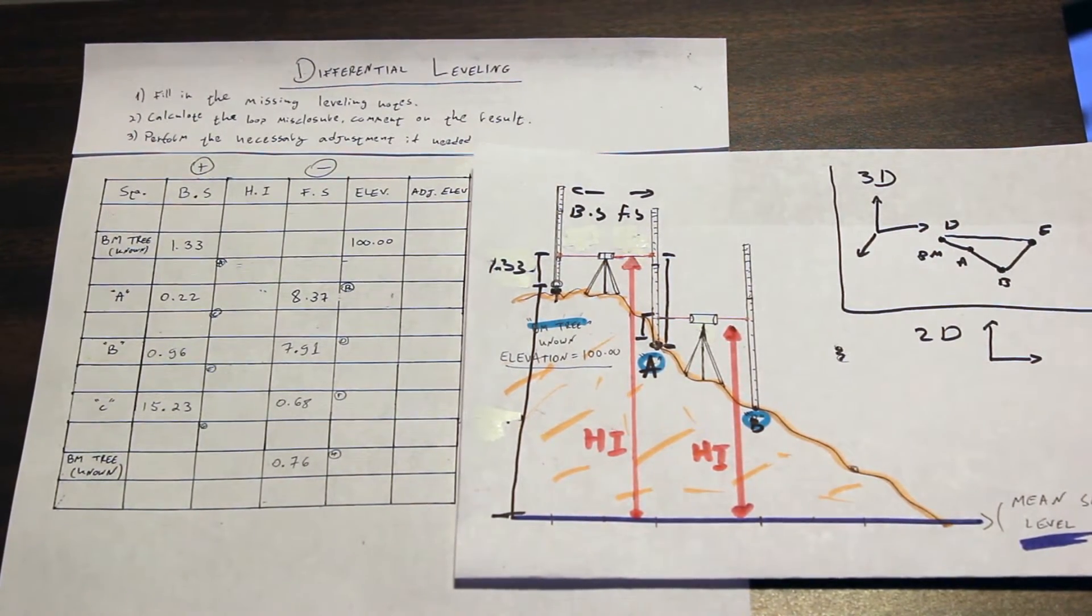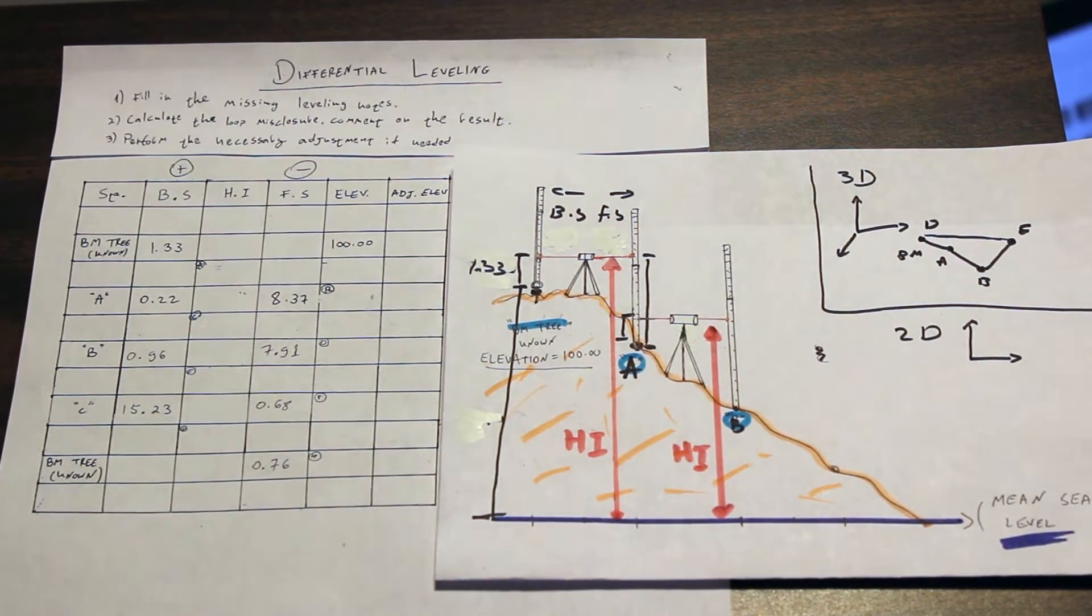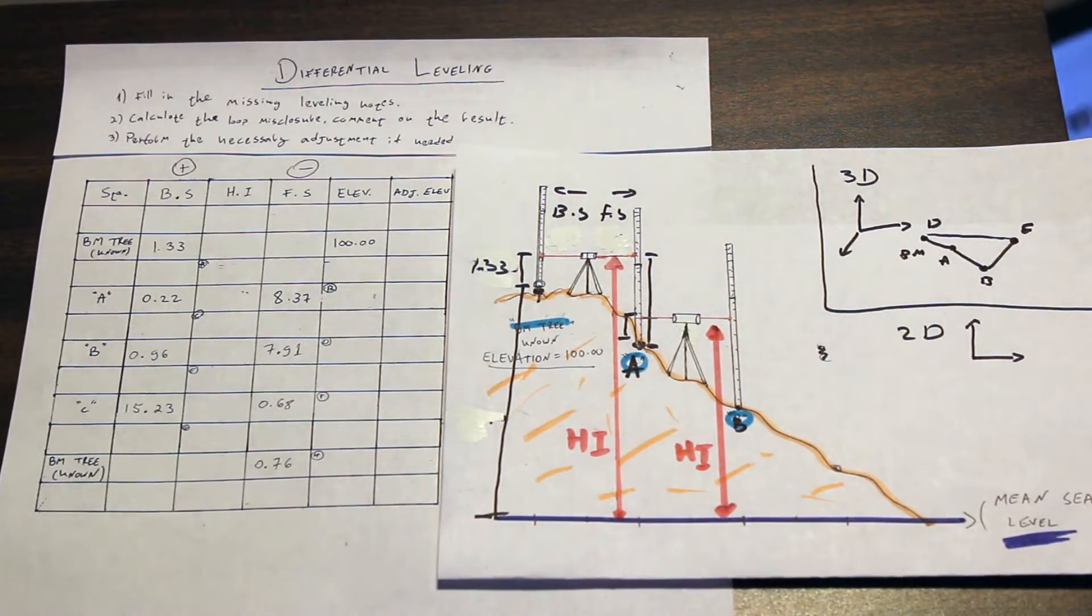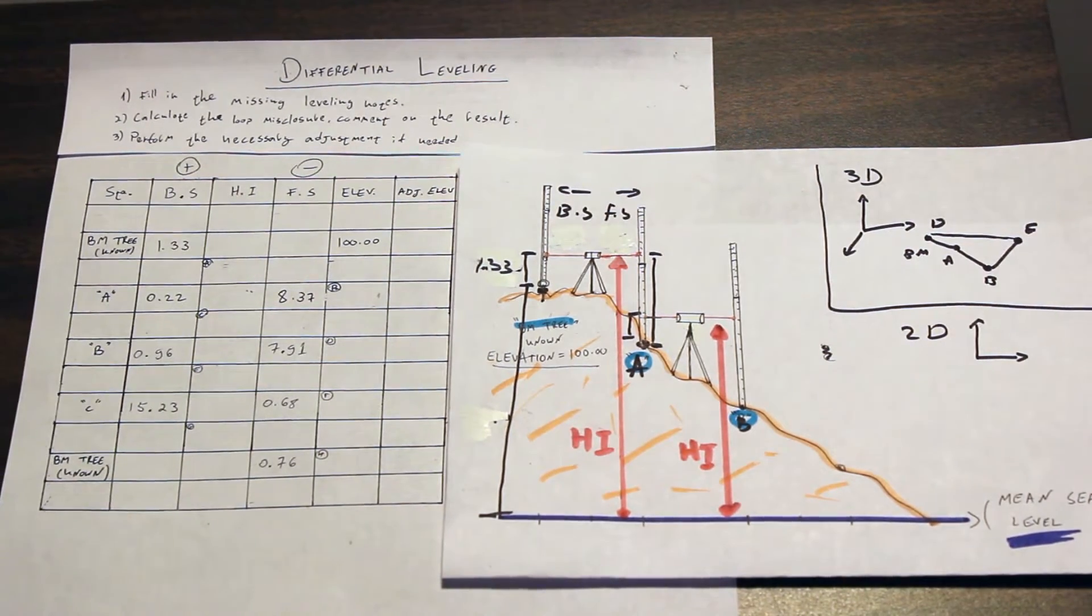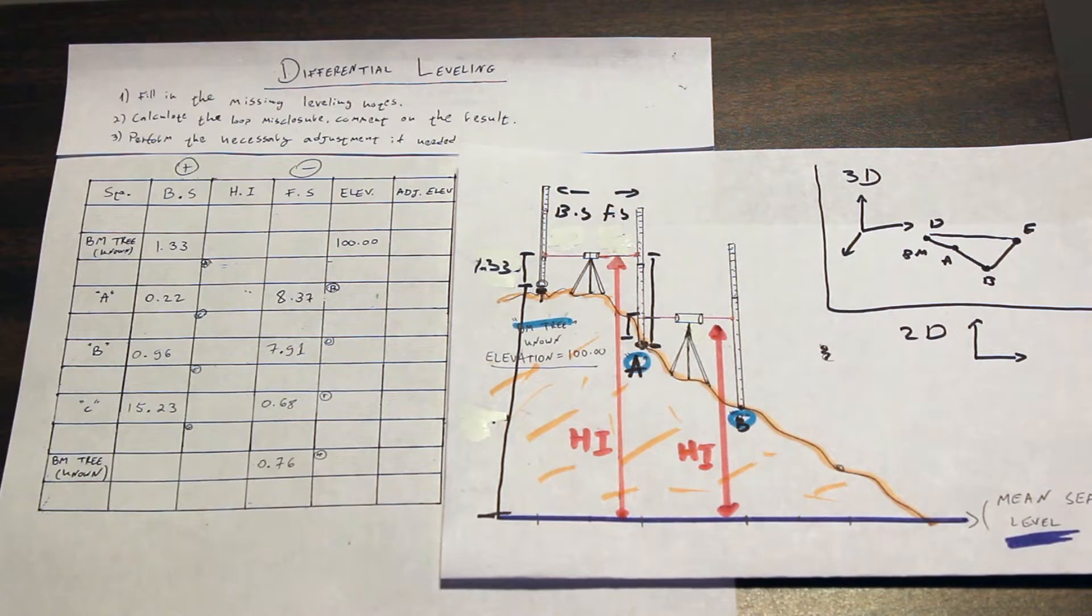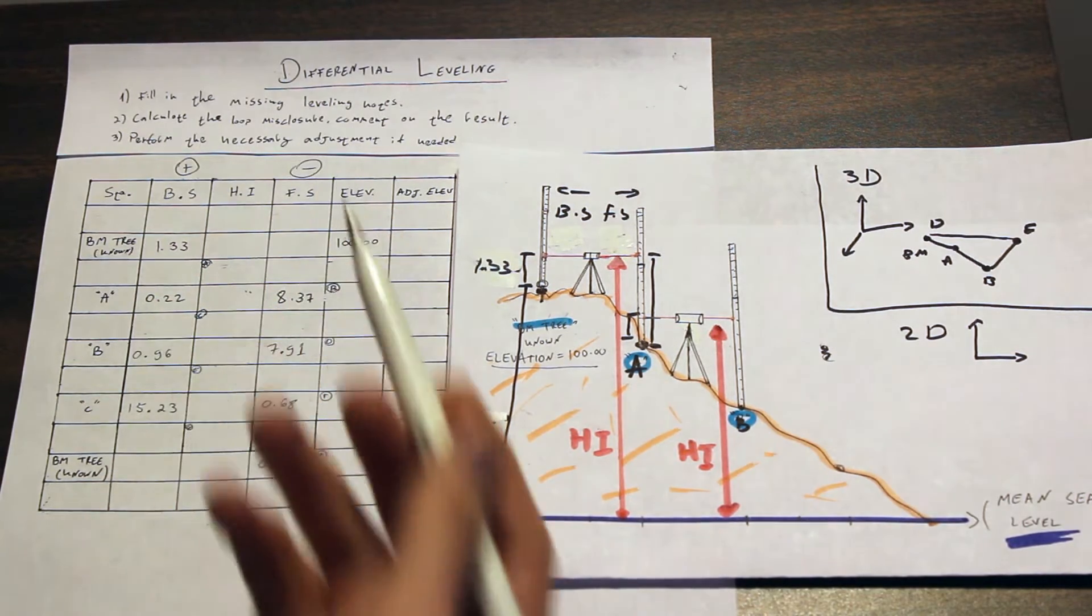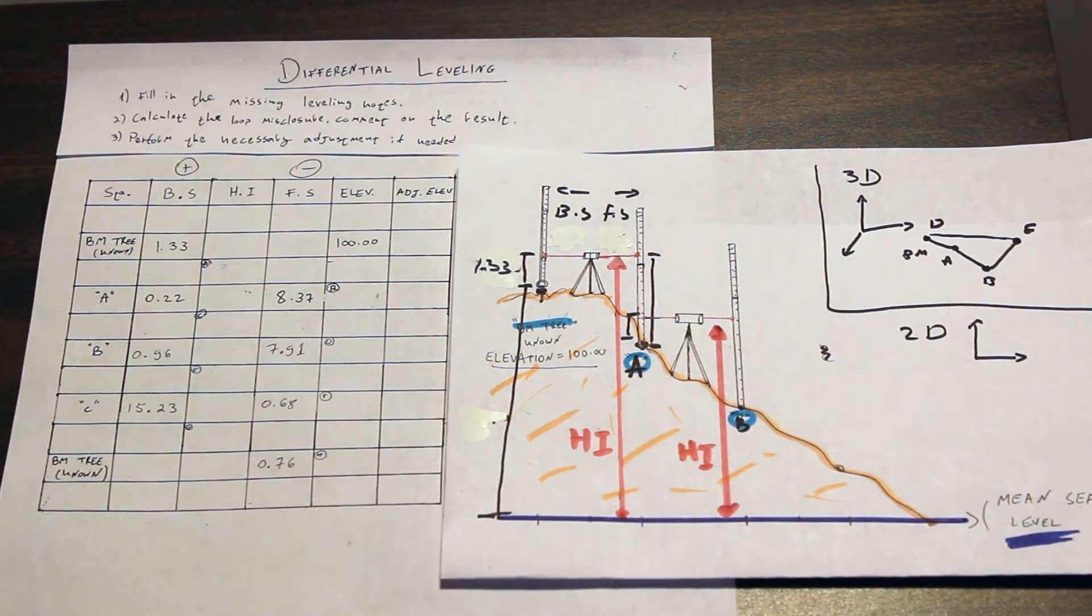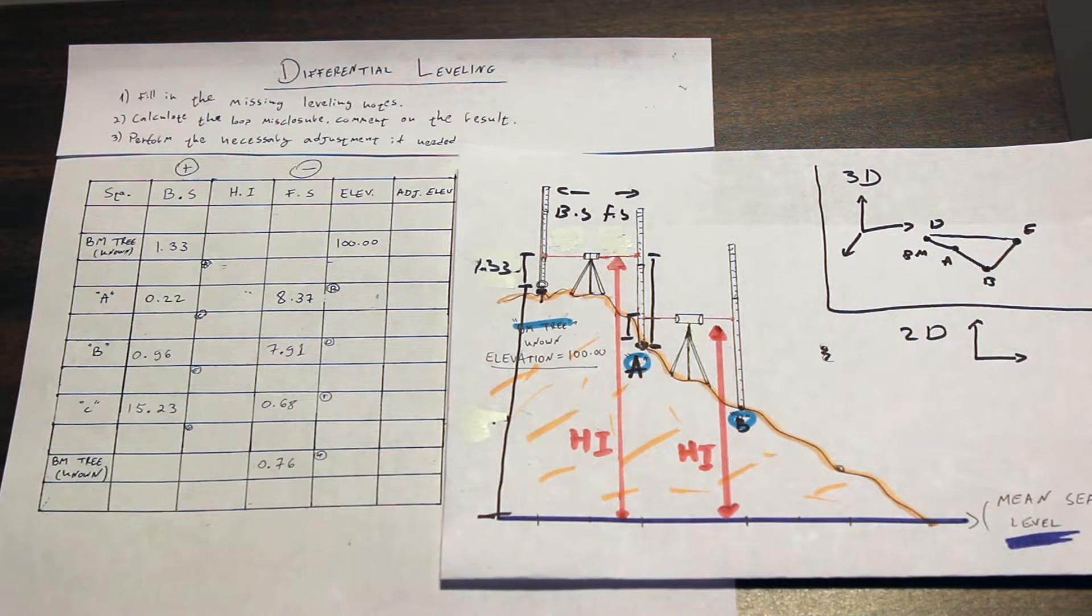So I'm going to do a really simple question which will hopefully help you figure out the theory, and then we'll try and do one midterm question later with a few tricks on it. In this question, we need to fill in the missing leveling notes, calculate the loop misclosure, and perform the necessary adjustments if needed.